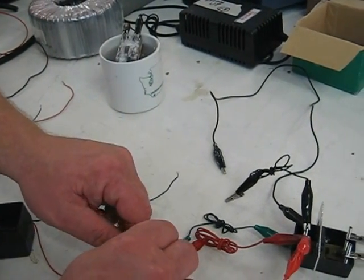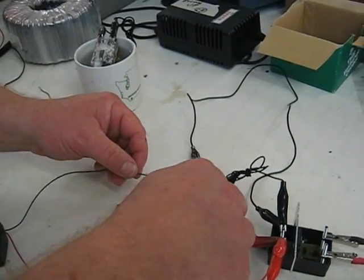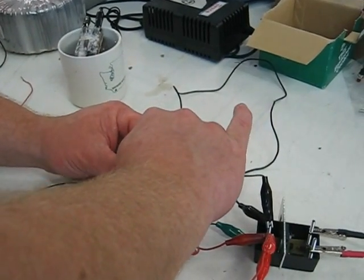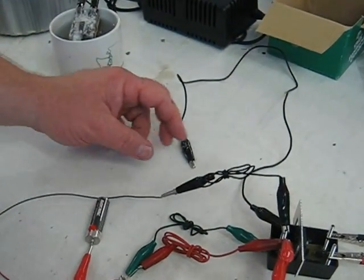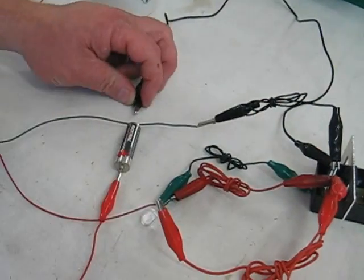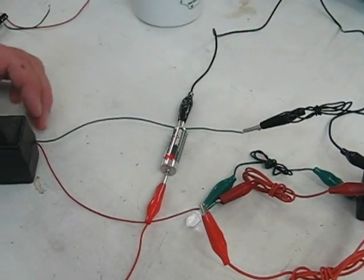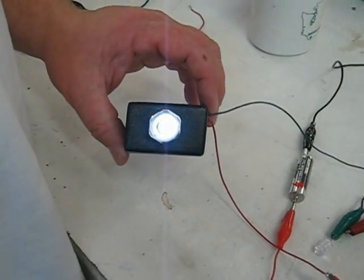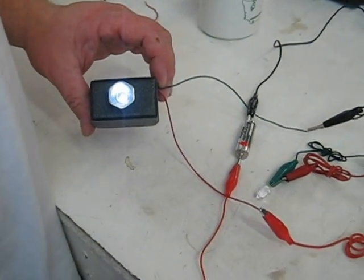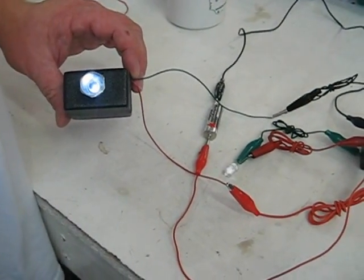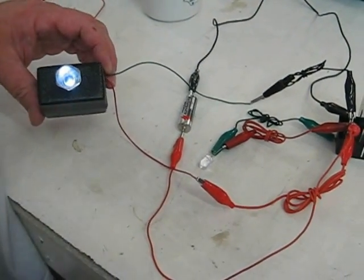So we'll show you that we can run this down to 1.2 volt rechargeable battery here. So it's going through the switch and 1.2 volts goes through the oscillator. It gives us the potential we need and the current to run the LED.